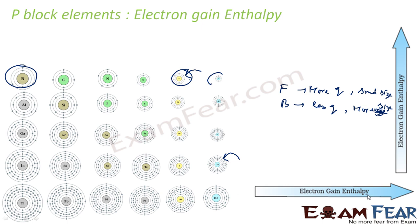So if you go from left to right in the periodic table, the electron gain enthalpy increases because more energy is liberated when an electron is attracted to Fluorine. Similarly, if you go down the group, let's compare Carbon and Germanium. Carbon has less charge but less size, whereas Germanium has more charge but a very huge size.